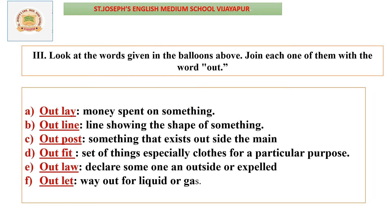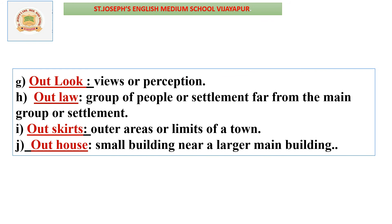Look at the words with the prefix 'out-': 'outlay' — money spent on something; 'outline' — showing the shape of something; 'outpost' — something that exists outside the main area; 'outfit' — a set of clothes for a particular purpose; 'outlaw' — to declare someone expelled; 'outlet' — a way out for liquid or gas; 'outlook' — views or perception; 'outskirt' — outer areas or limits of a town; 'outhouse' — a small building near a larger main building.